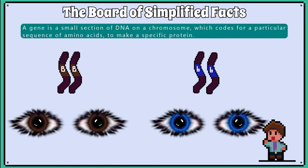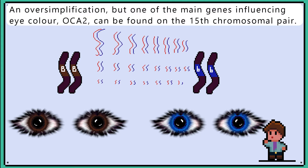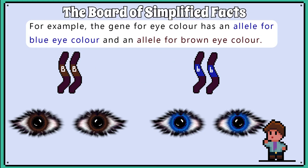We can describe that there is a gene for eye colour, and an allele would describe the different versions of that gene. An oversimplification, but one of the main genes influencing eye colour, OCA2, can be found on the 15th chromosomal pair. The allele of that gene will be found on both chromosomes in the 15th pair. For example, the gene for eye colour has an allele for blue eye colour, and an allele for brown eye colour in this example.